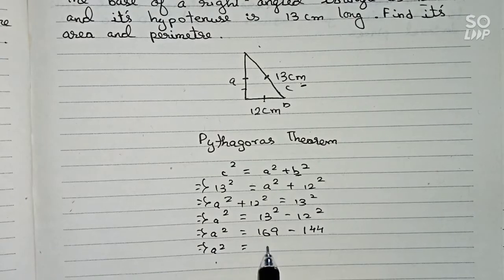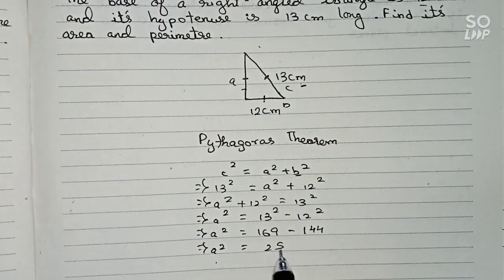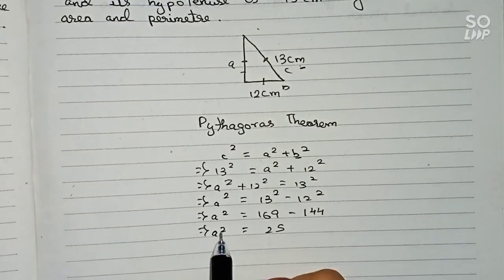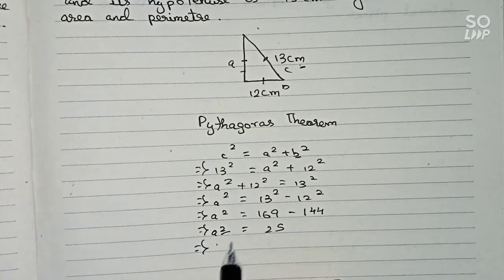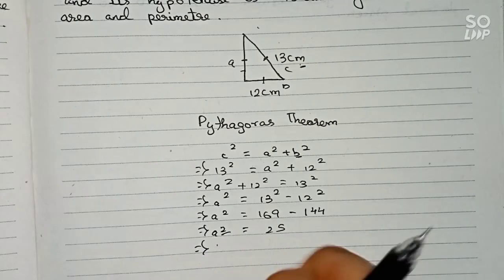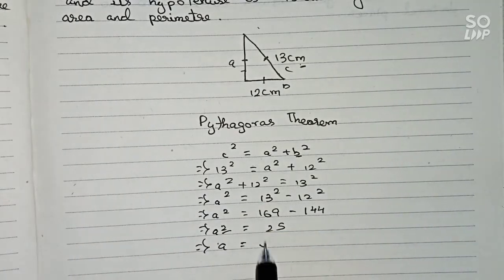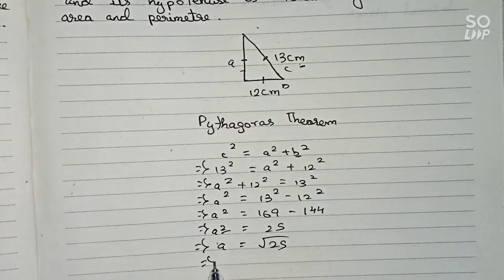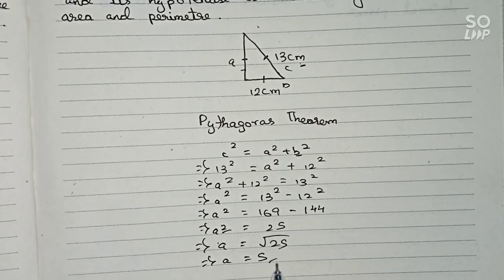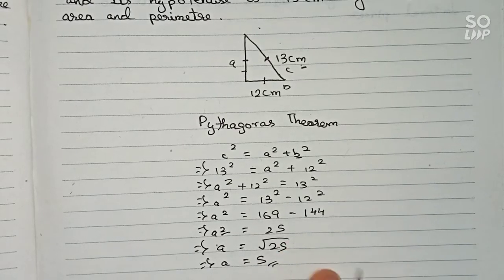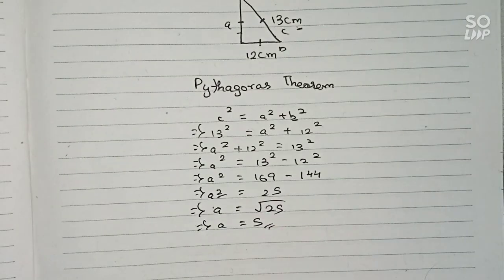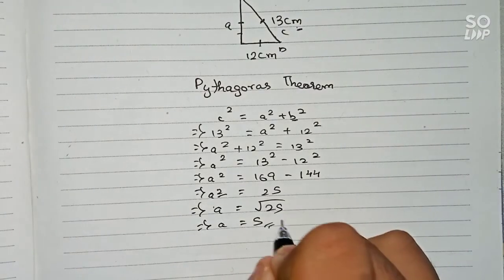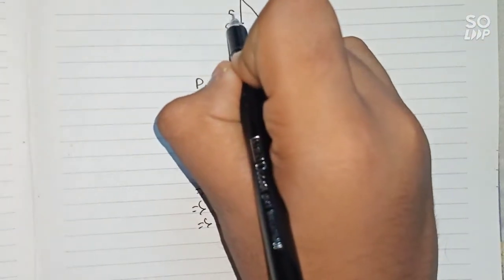So a² = 25. To remove the square, we take the square root: a = √25 = 5 centimeters. So this unknown side is 5 centimeters long.